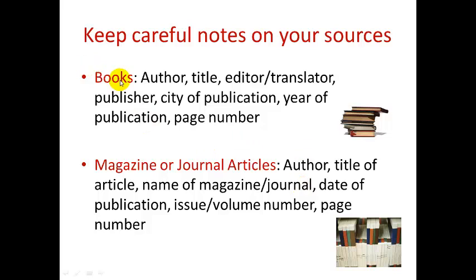When you are doing research from books, it's very important to know who the author of the book is, what the title of the book is, and also if it's an edited collection, you want to know who the editor is. If it's been translated from another language, you want to know who the translator is. There will always be a publisher, a city of publication, a year of publication, and also if you're using a specific quotation or piece of information, you want to write down the page number where you got that information.